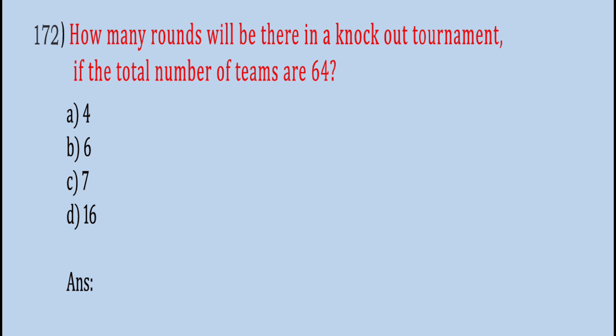How many rounds will be there in a knockout tournament if the total number of teams are 64? 4, 6, 7, or 16. The correct answer is B, 6 rounds.